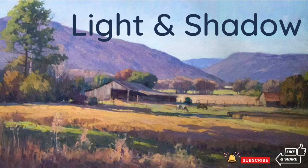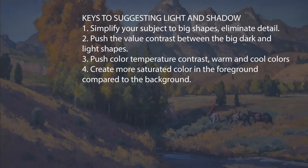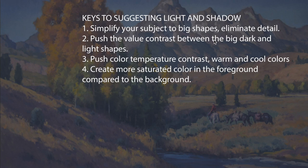Today we are looking at ways to suggest light and shadow in painting, specifically using photographs, but also painting outside. I try to do these things to help me see the difference between the dark and the light, and to push those differences to create more effect of light and shadow. The first key to remember is to simplify your subject — the big shapes — and eliminate detail, because we're geared towards looking at detail, not the big shape. Get in the habit of finding those big dark and light shapes.